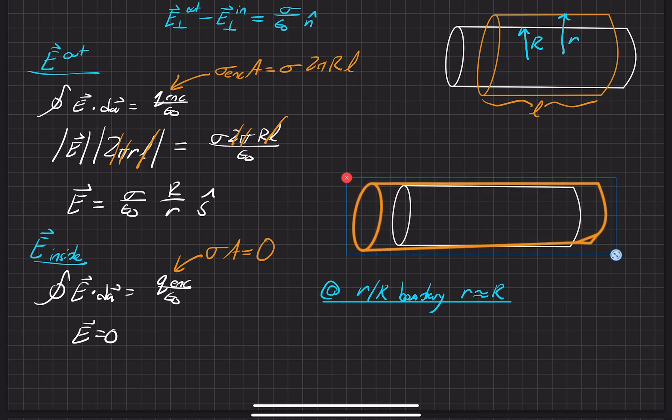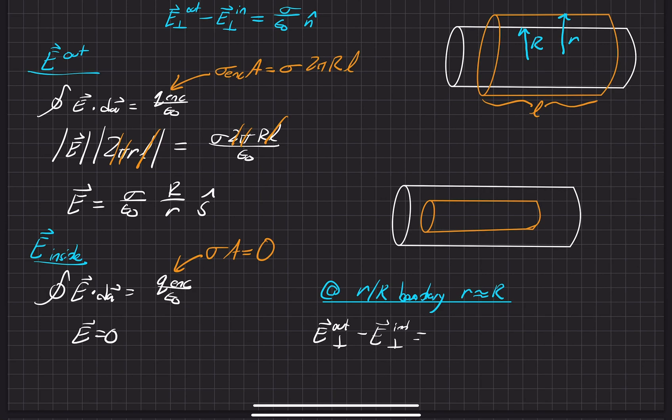and a Gaussian surface that's barely right there, we can approximate those two. So right at that boundary, the electric field that's on the outside and the difference between that and the one that's right on the inside is equal to,